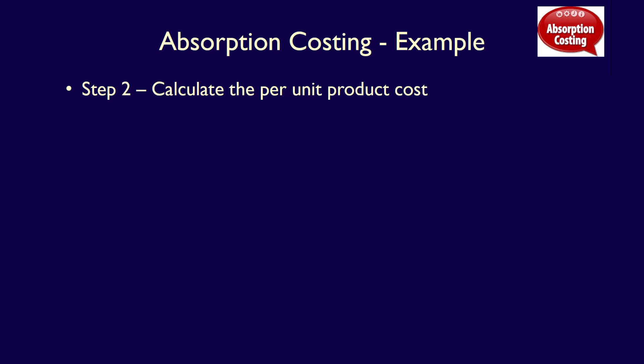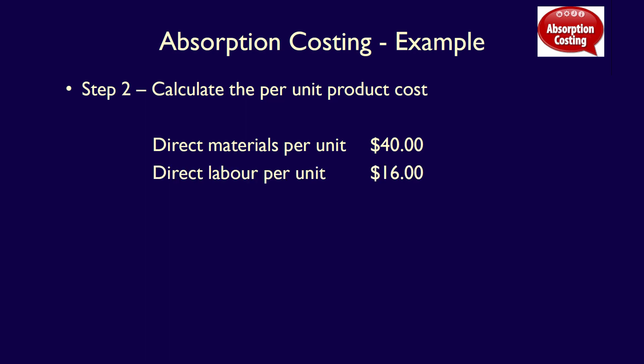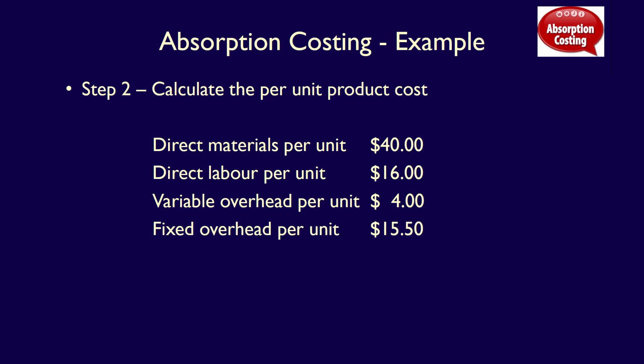Step 2 is to calculate the per unit product cost, also called inventoriable cost, which includes direct materials of $40 per unit, direct labor of $16 per unit, variable overhead of $4 per unit, and fixed manufacturing overhead of $15.50 per unit. This is a total per unit cost of $75.50. This is the absorption per unit cost that we will use to determine both the cost of goods sold and the value of ending inventory.